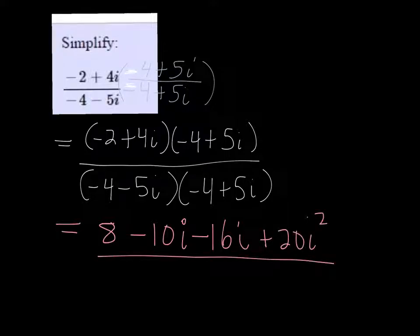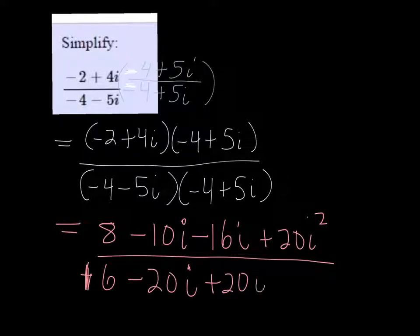In the bottom we get positive 16, and negative 20i, positive 20i, and negative 25i squared.